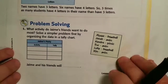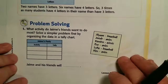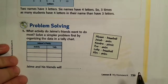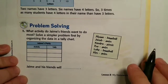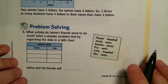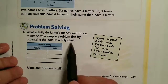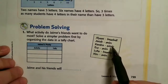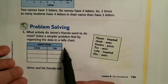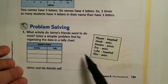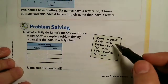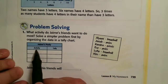I'm just going to jump right into problem solving number one. It reads: what activity do Jamie's friends want to do most? Solve the simpler problem first by organizing the data in a tally chart. So basically, take the information, turn it into a tally chart, and then just read the tally chart.